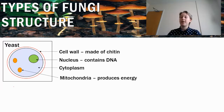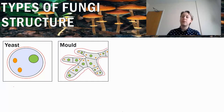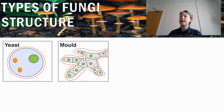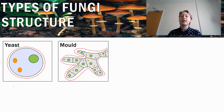Our next structure is the mould — we saw black mould earlier. One thing you might notice between the yeast and the mould cells is that the number of cells differs. The mould cell has lots of little cells in it, while the yeast cell has only one cell — it survives as only one cell. We would call the yeast unicellular because it has only one cell, and the mould multicellular because it has multiple cells.